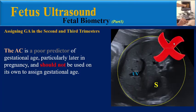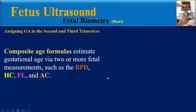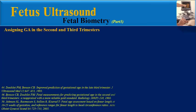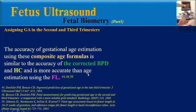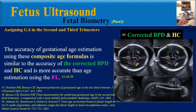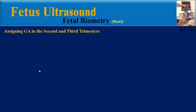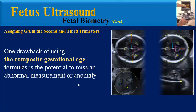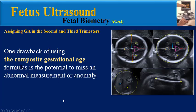The HC is a poor predictor of gestational age particularly later in pregnancy and should not be used on its own to assign gestational age. Composite age formulas estimate gestational age via two or more fetal measurements such as BPD, HC, FL, and AC. The accuracy of gestational age estimation using composite age formulas is similar to the accuracy of corrected BPD and HC, and is more accurate than age estimation using the FL. One drawback of using composite gestational age formulas is the potential to miss an abnormal measurement or anomaly.